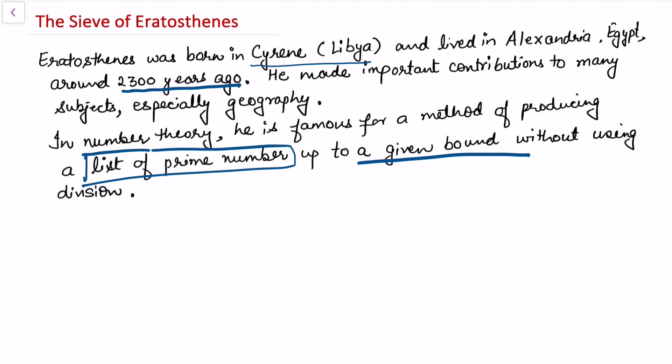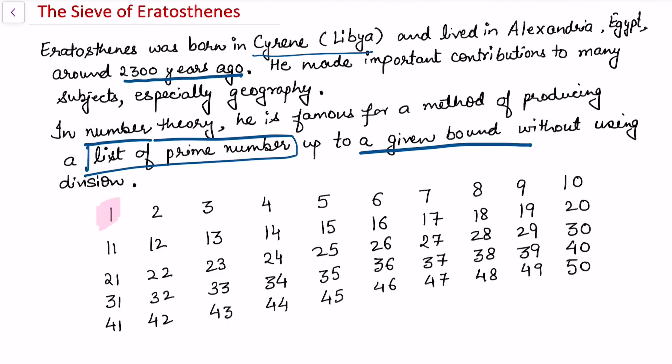For this, let me consider an example and list all the numbers from 1 to 50. We'll search all the primes between this range. Now in this list, just ignore 1 because 1 is neither a prime nor a composite number, as I've already discussed in my earlier video. All the other numbers are actually multiples of 1.